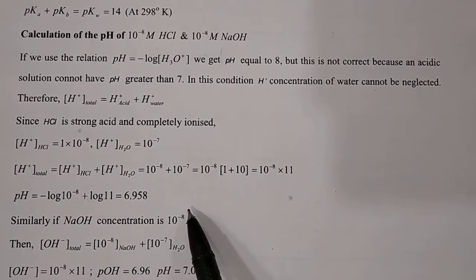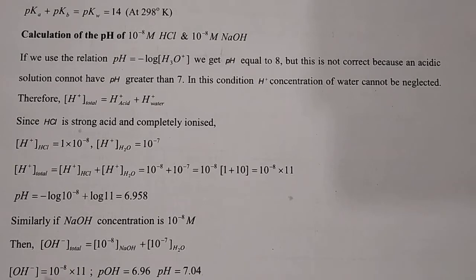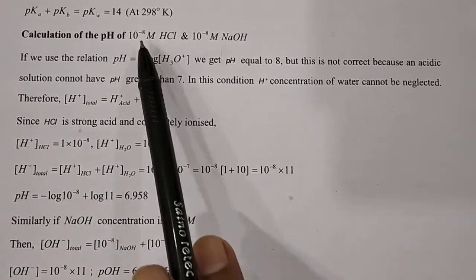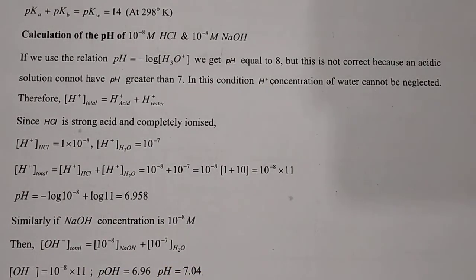Similarly, for 10⁻⁸ molar NaOH: total [OH−] = 10⁻⁸ (from NaOH) + 10⁻⁷ (from water) = 11×10⁻⁸. pOH = −log(11×10⁻⁸) = 6.96. Therefore pH = 14 − 6.96 = 7.04. This is greater than 7, confirming it is basic, as expected for NaOH.